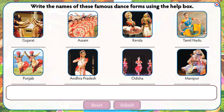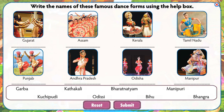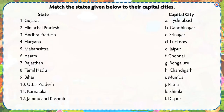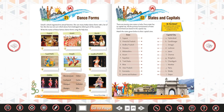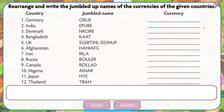Write the names of these famous dance forms using the help box. Match the states given below to their capital cities. Rearrange and write the jumbled up names of the currencies of the given countries.